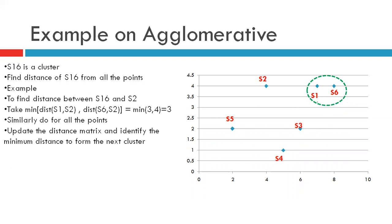Now we have to find the distance between cluster s16 and s2, s3, s5, and s4. Since there are two points in this cluster, s1 and s6, we need to decide which point to use for the distance calculation. As we are using minimum distance measure, we find the distance between s1 and s2 and also between s2 and s6, and whichever is the minimum we consider that to be the distance between cluster s16 and s2. The minimum distance between cluster s16 and s2 is equal to 3. Likewise we find the distance of s16 from s5, s3, and s4.